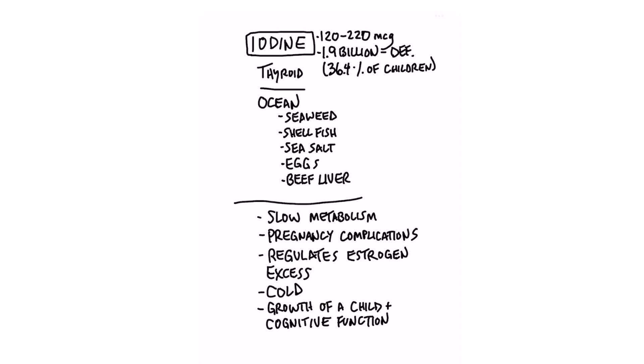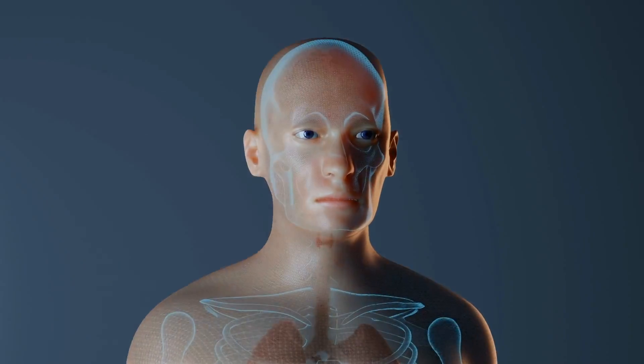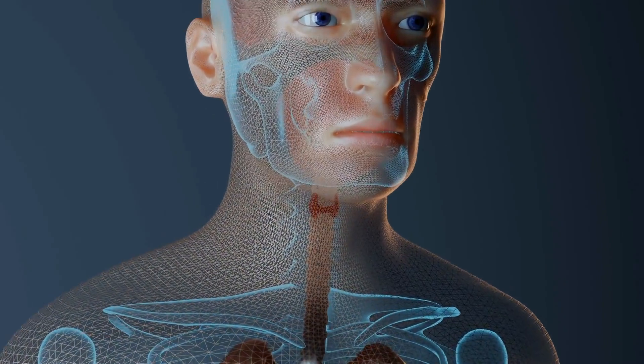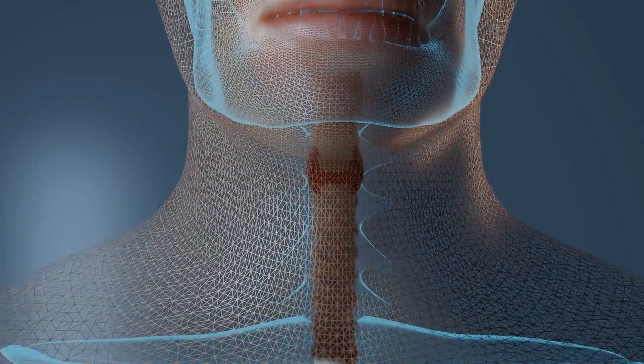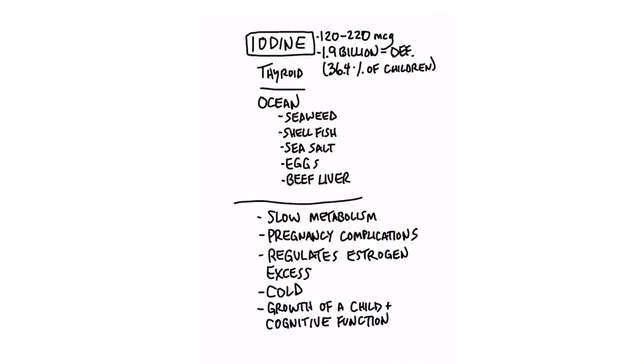Eggs also have iodine, and beef liver has a good amount as well. If you don't have iodine, your thyroid can't work — you can't make thyroid hormones. When you talk about thyroid hormones like T4 or T3, you're talking about the number of iodine molecules in that hormone. T4 is the inactive version and T3 is the active version. You need iodine to make these hormones. Without enough iodine, your metabolism is slow and you get pregnancy complications like stillbirth and miscarriages.